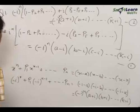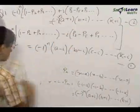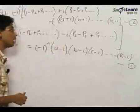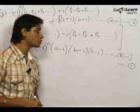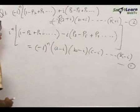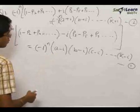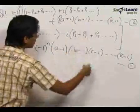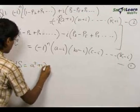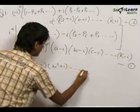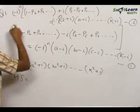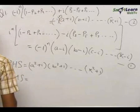Now multiplying Expression 1 and Expression 2: on the right-hand side, (a−i)(a+i) = a² − i² = a² − (−1) = a² + 1. Similarly for each root. The factor (−1)^n · (−1)^n = (−1)^(2n) = 1. On the left side, i^n · (−i)^n = (i·(−i))^n = (−i²)^n = 1^n = 1.